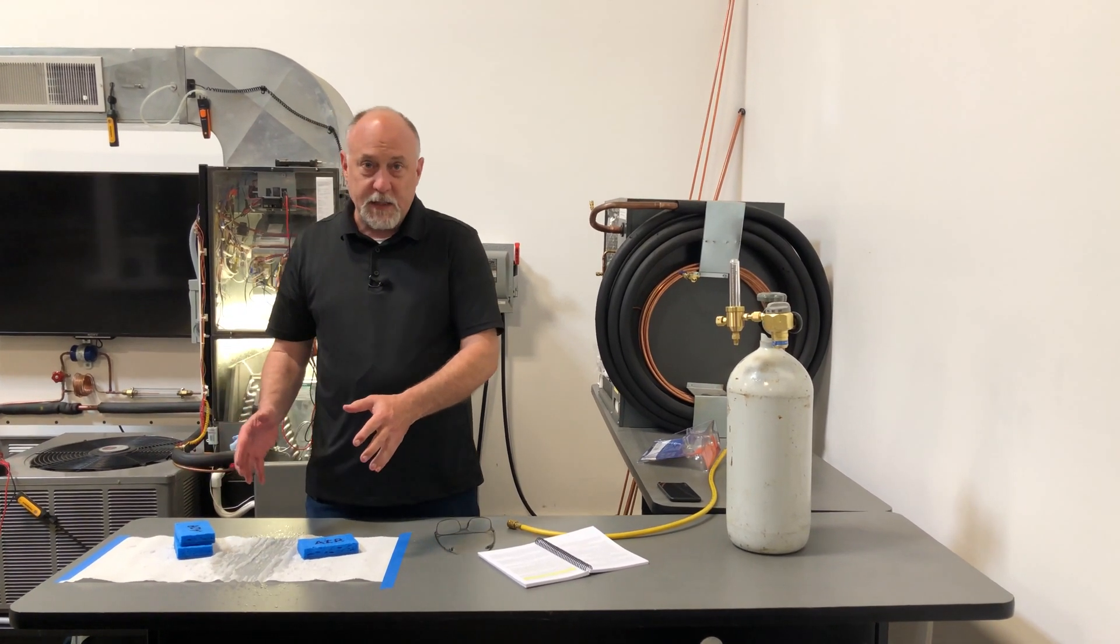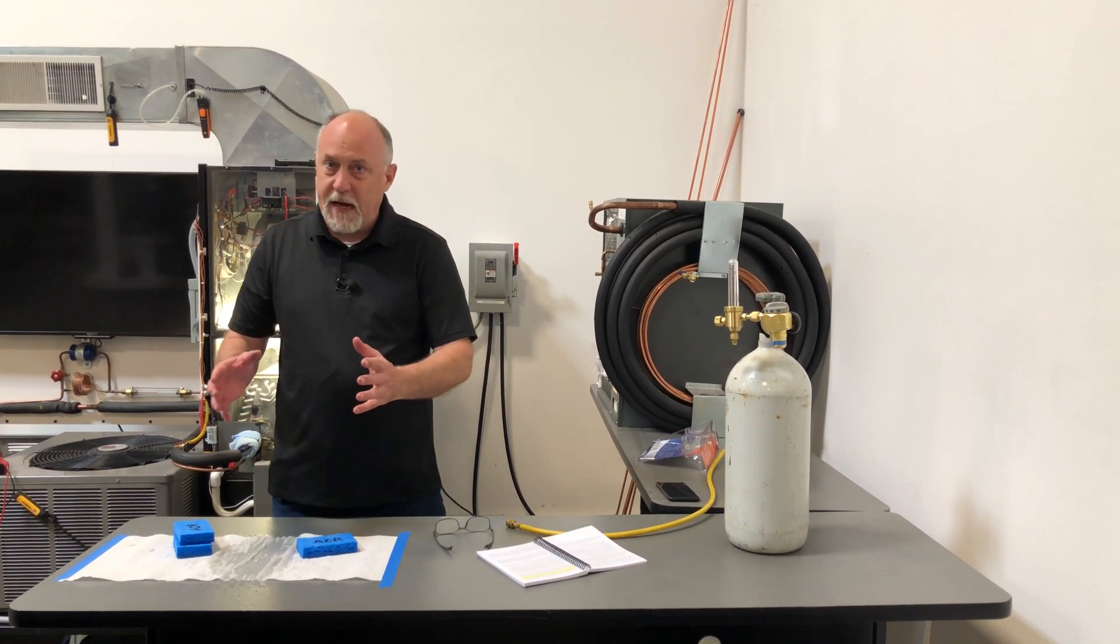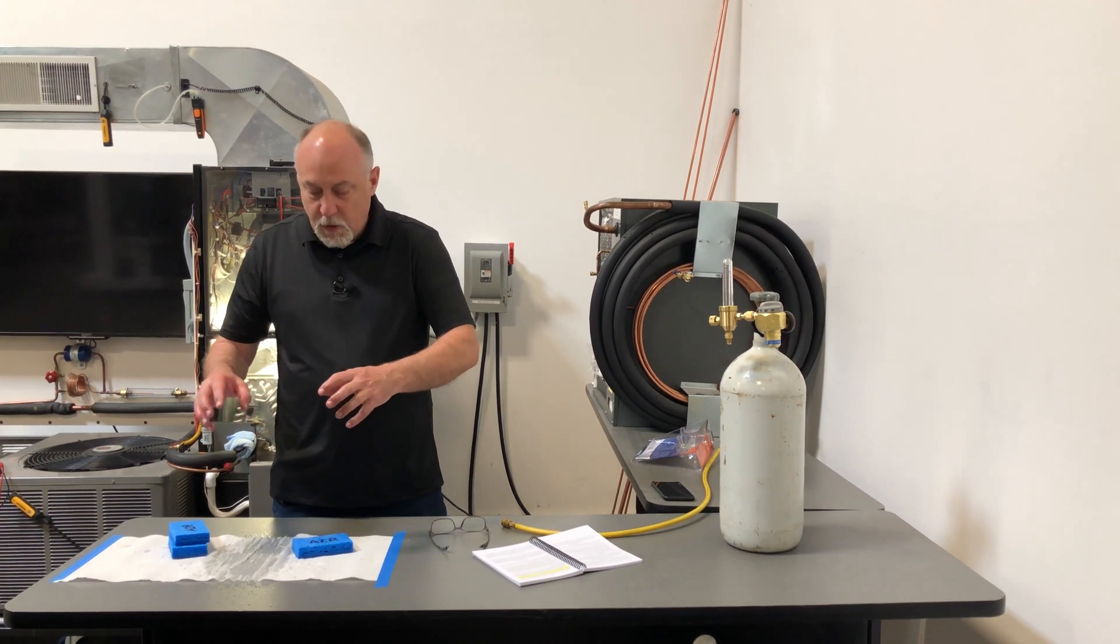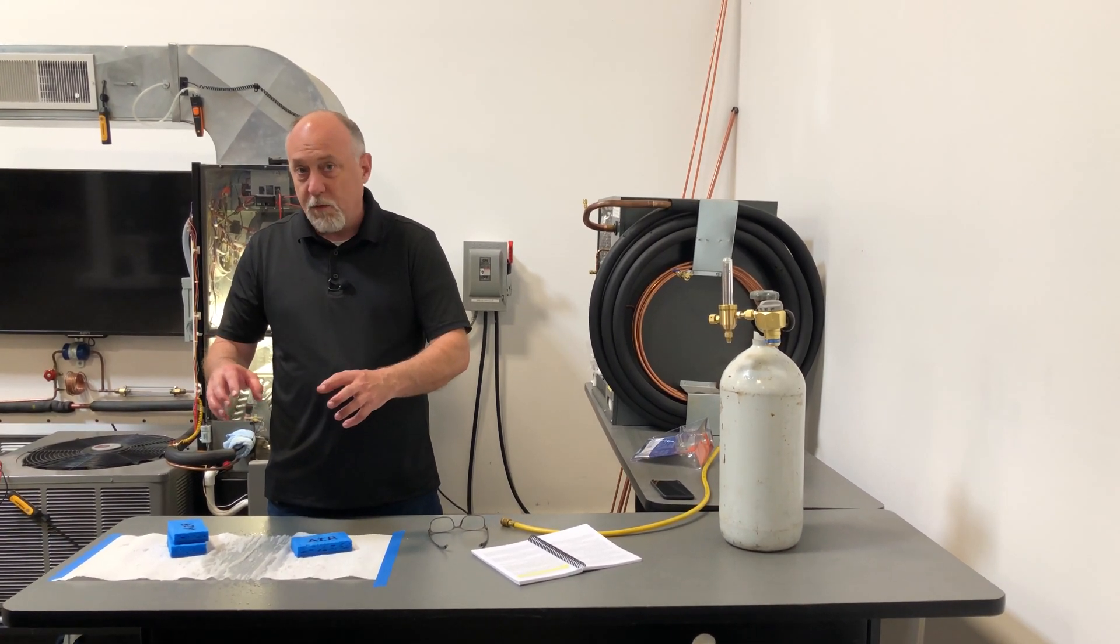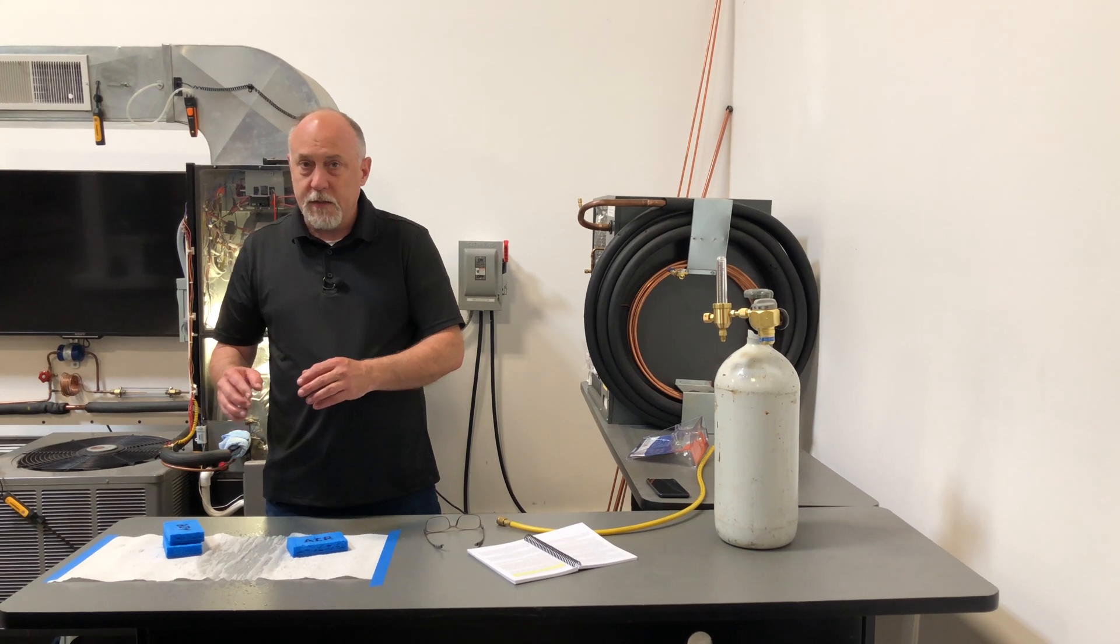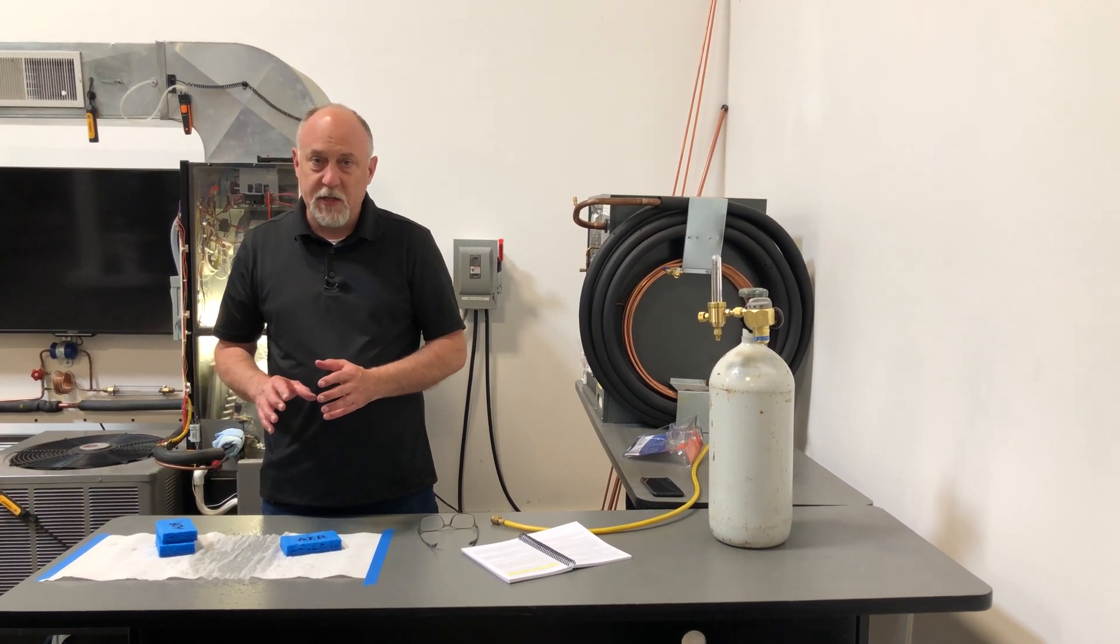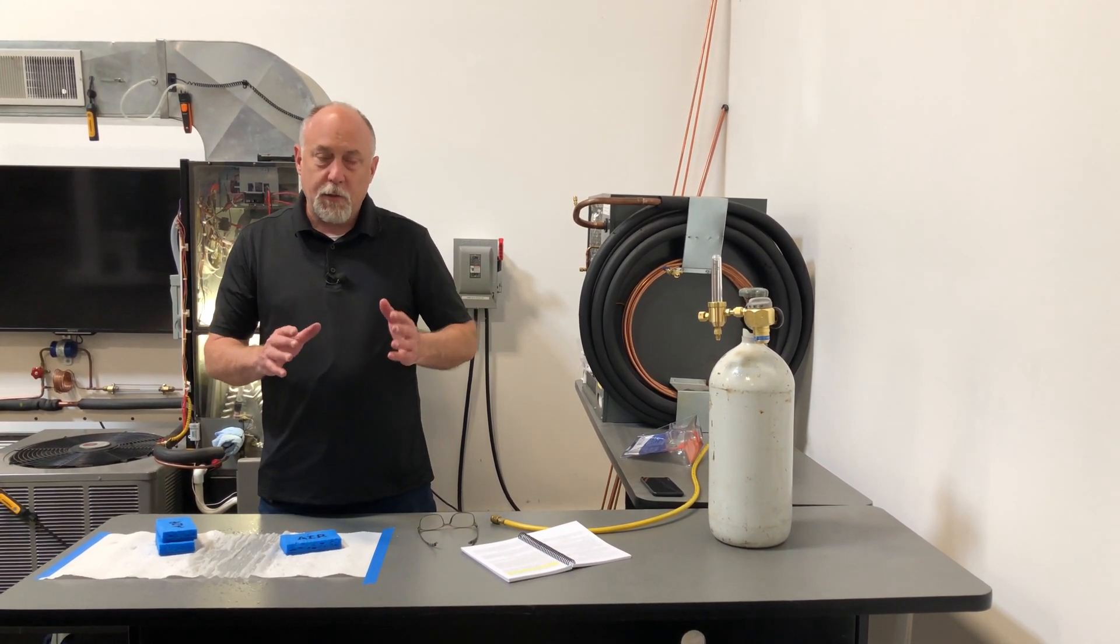Now just imagine how long this paper towel is going to take to dry out. Remember there's no flow in a vacuum, we're just reducing pressure, so all this moisture has to boil away before we can carry it out of the system. If you want to decrease your evacuation time substantially, the secret is purge with nitrogen.